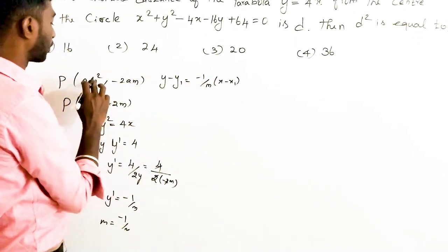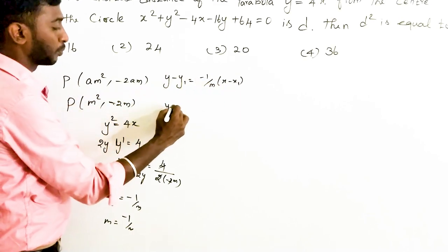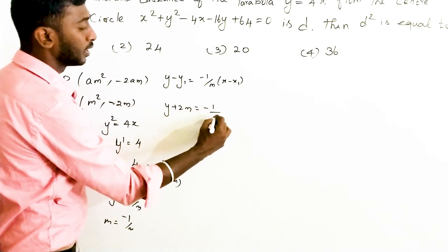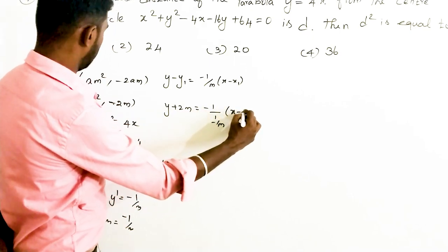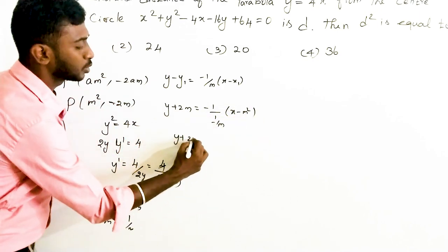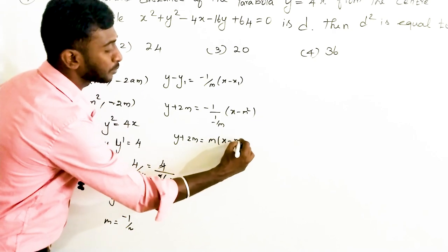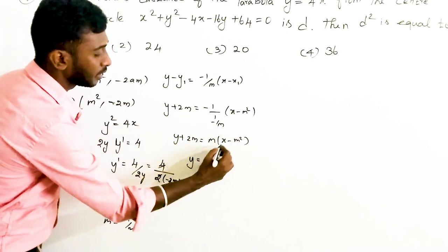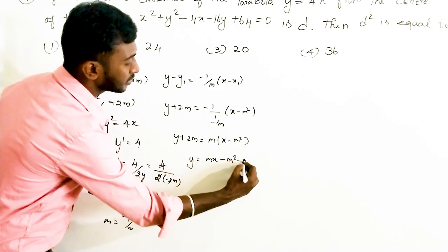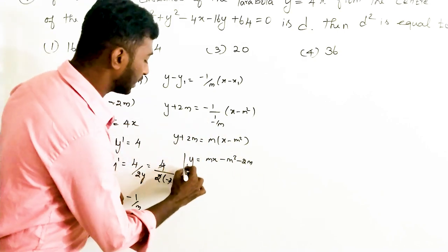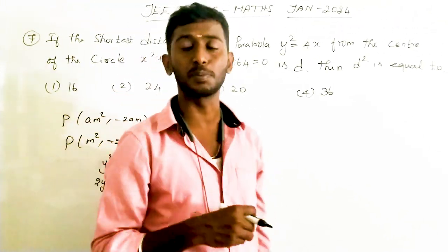Substituting x₁ = m² and y₁ = -2m into the normal equation: y + 2m = (-1/m)(x - m²). Simplifying, y + 2m = (-1/m)·x + m, so y = (-1/m)·x + m - 2m, giving the equation of the normal as y = mx - m³ - 2m.